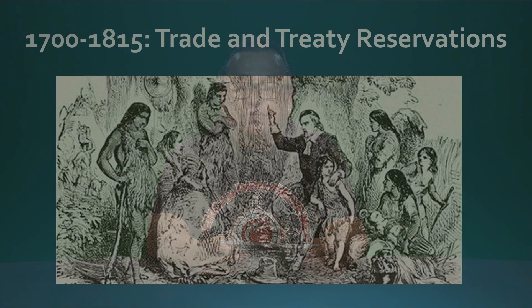The first period is 1700 to 1815, known as the trade and treaty reservations. It is during this time that Thomas Jefferson's notion of a nation of small farmers comes to fruition, because in these trade and treaty reservations, the whole idea is to disentangle Native peoples from their lands. This is what the United States will eventually inherit from British native removal policies.